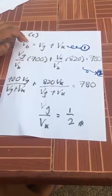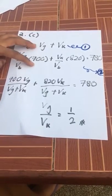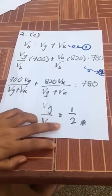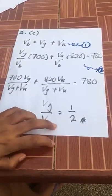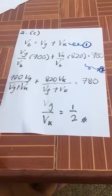So you have to do simultaneous equations for both. And then you can find out Vg over Vk, which is half. So the volumetric ratio of Vg over Vk is 1 to the ratio of 2.